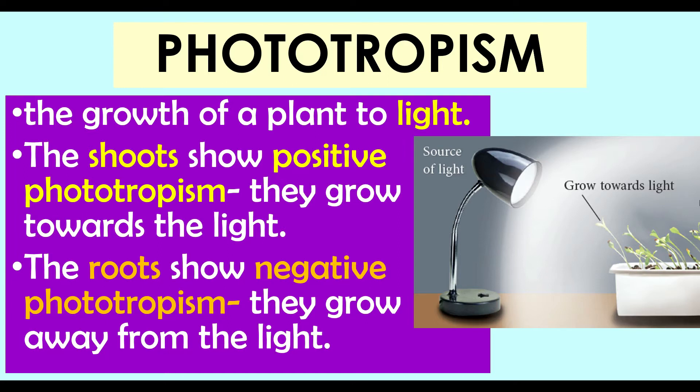The first is phototropism — the response of plants towards light. Shoots of plants show positive phototropism, growing towards the direction of light, as plants need light to carry out photosynthesis. This ensures that shoots and leaves obtain enough sunlight to make food. Meanwhile, roots grow away from light and are said to show negative phototropism.